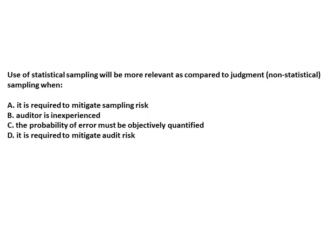Let us discuss some questions. When would use of statistical sampling be more relevant compared to judgment sampling? Statistical sampling is more relevant when we need the probability of error to be objectively quantified. Options that suggest any sampling technique will mitigate sampling risk or audit risk would be incorrect, as neither technique alone mitigates those risks.